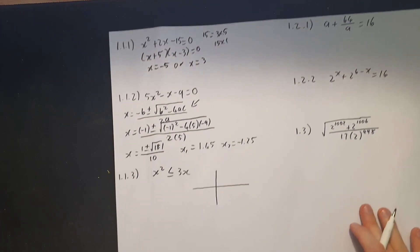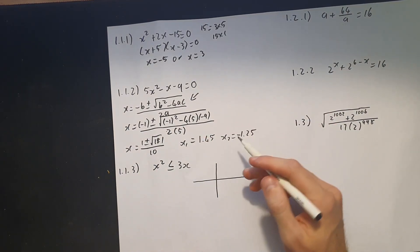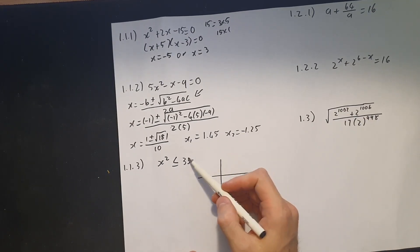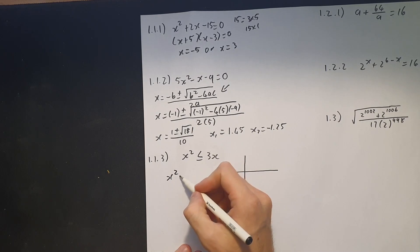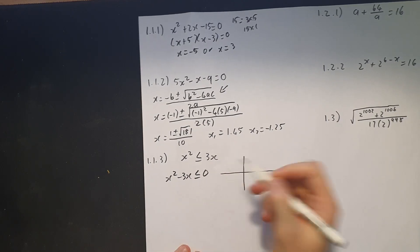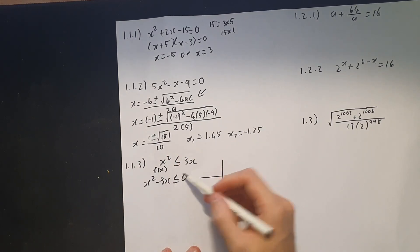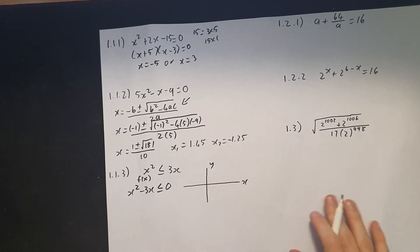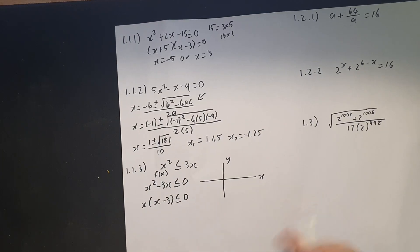Moving to 1.1.3 — big note: you cannot solve inequalities without the use of a number line or a function. I prefer to use a function because it's easier to see what's happening. Taking the 3x over gives x² − 3x ≤ 0. This is asking where the function f(x) is below the x-axis. Simplifying: x(x − 3) ≤ 0.